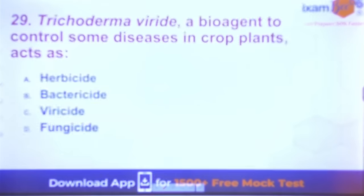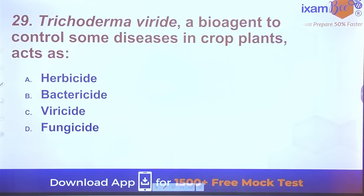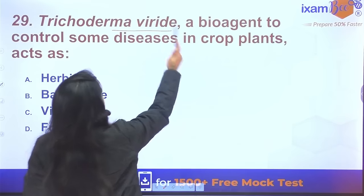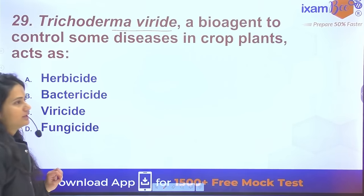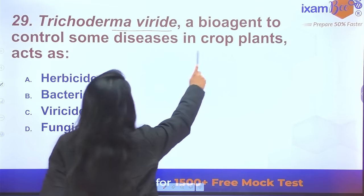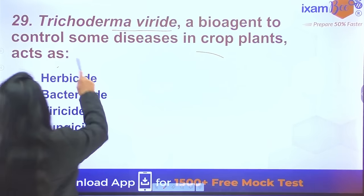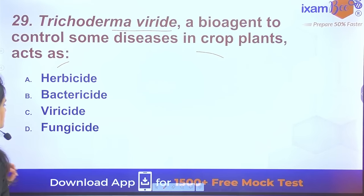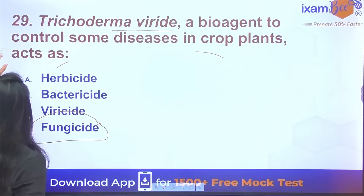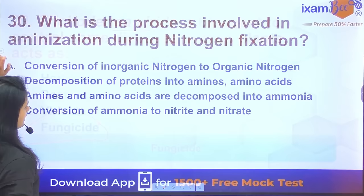Question 29: Trichoderma viride is basically a fungus used as a bioagent to control diseases in crop plants. It acts as a fungicide and controls other fungi.